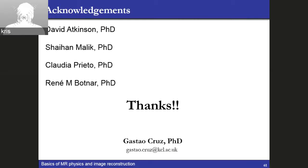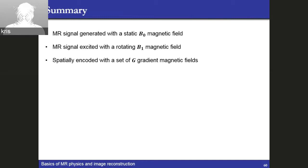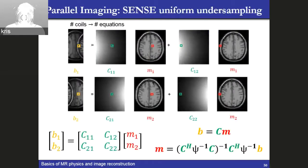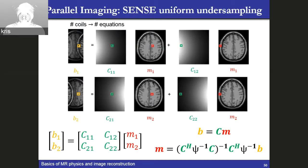Going back to the slides and coil sensitivity: for reconstruction, you need the coil sensitivity maps. Commonly, before you acquire your undersampled k-space, you do a small calibration scan — acquiring a low-resolution set of images from which you can estimate the coil sensitivities. You do this once at the beginning of your scanning session, and then you can use these coil sensitivities to reconstruct all different types of images with different accelerations and contrasts.